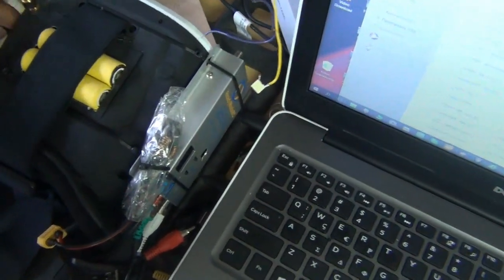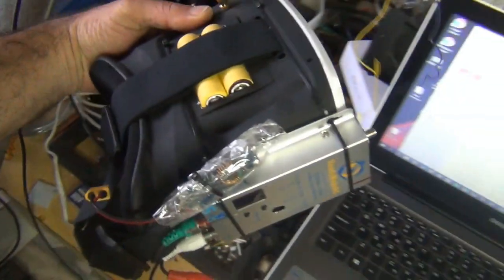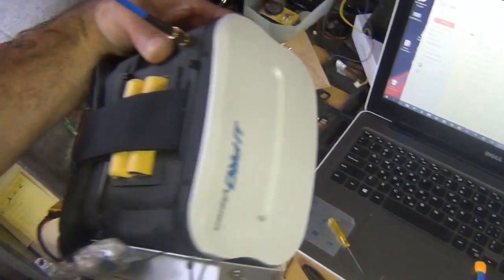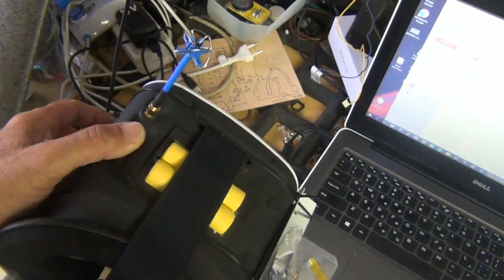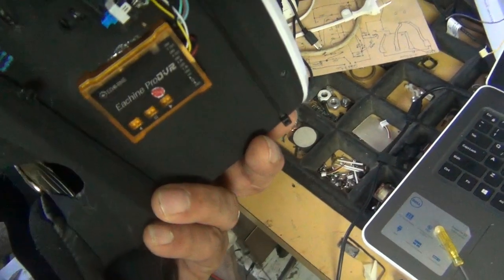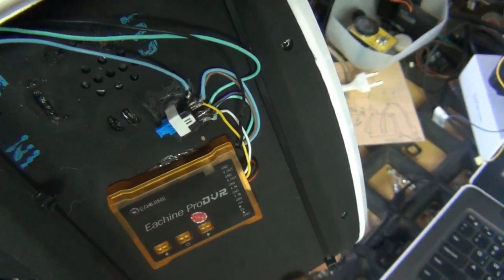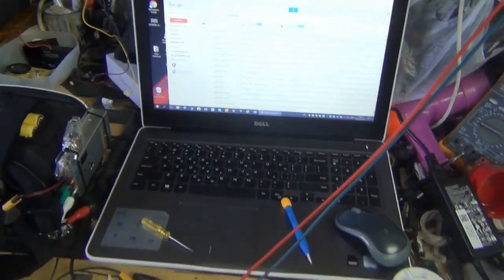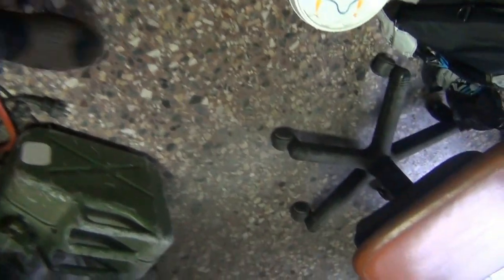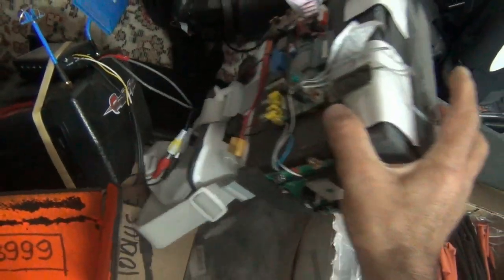This is my FPV goggle. I have four goggles, different goggles. Here is my receiver. Here on the side is my recorder, my DVR. What else? Nothing else. I will show you my goggles. This is my little dog, this is Berger, Berger, hello. These are my goggles, all self-made.